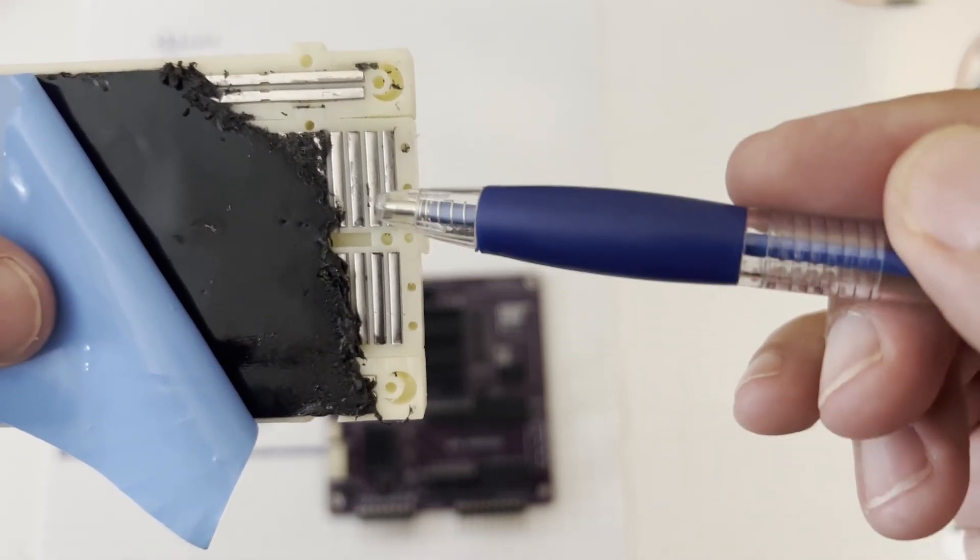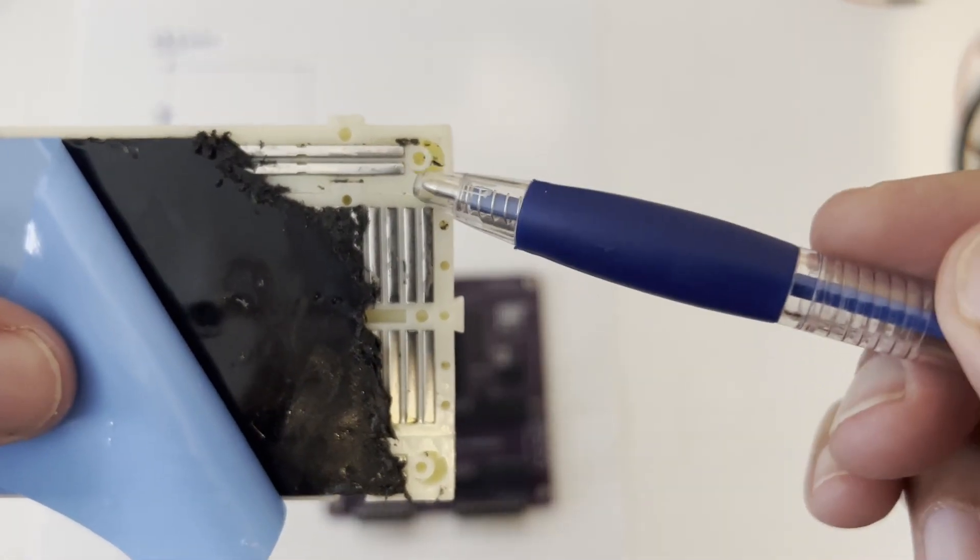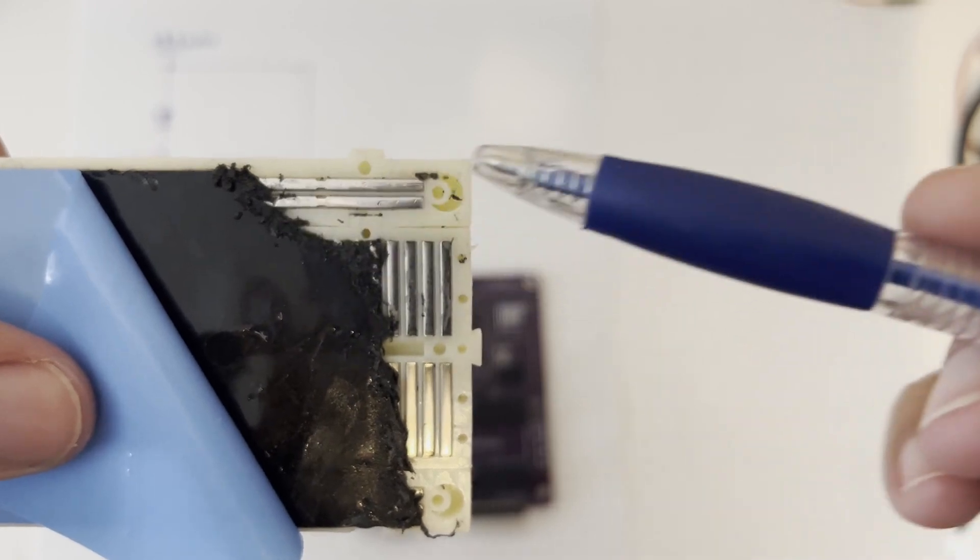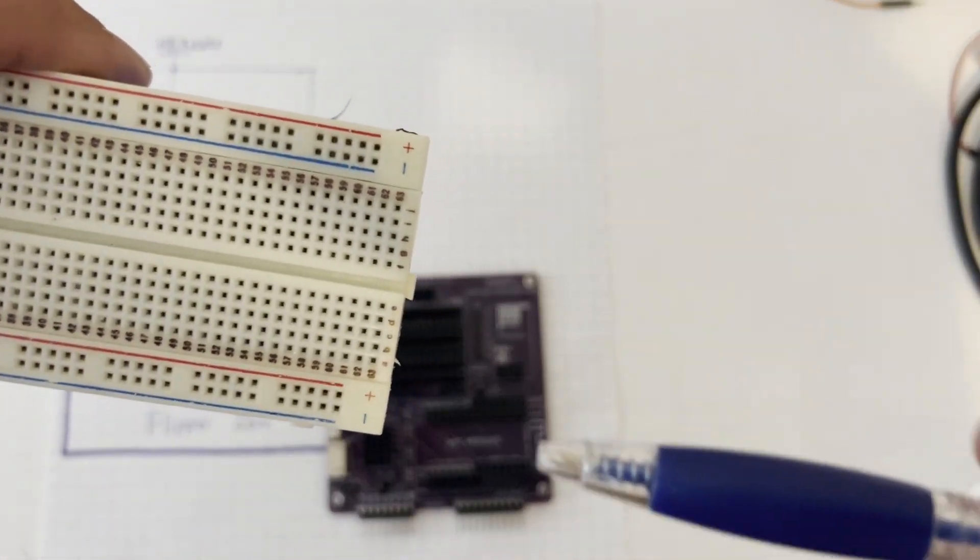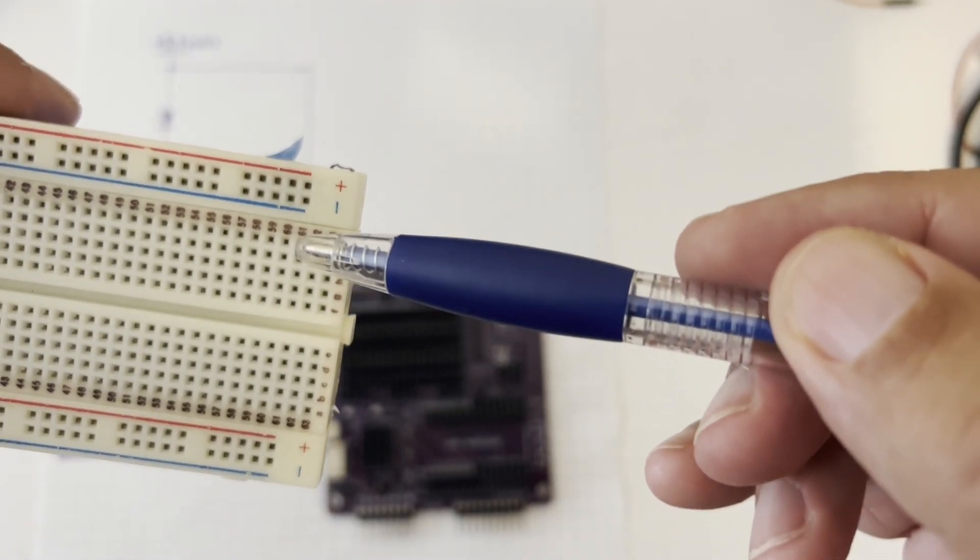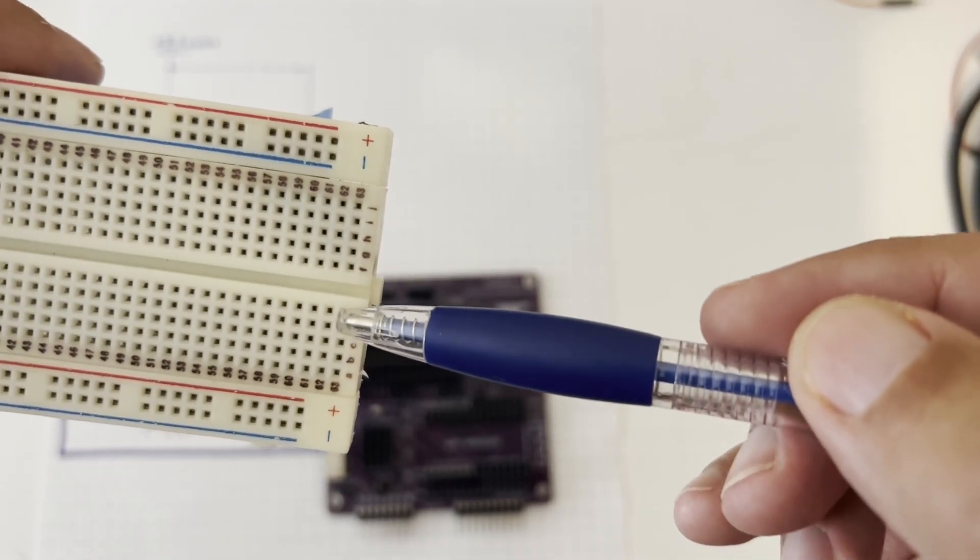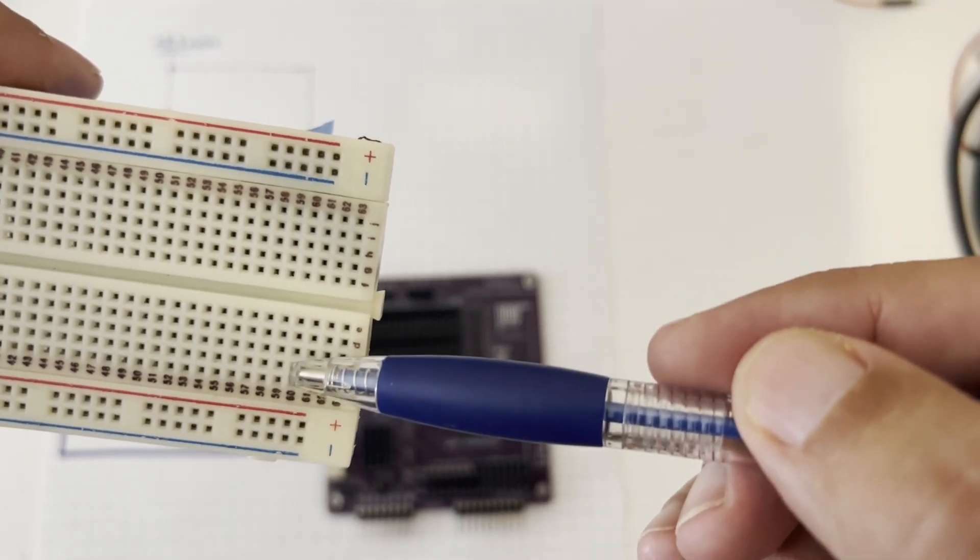And then down here is also different rows. And the top and bottom rails are also connected. So there's a row here for the positive and a row for the negative. So now you can see how each row of these five pins are connected together and then the next row of five are connected to each other. And then the A through E on these bottom rows are all connected to each other.